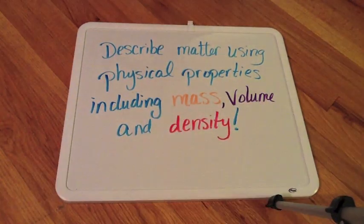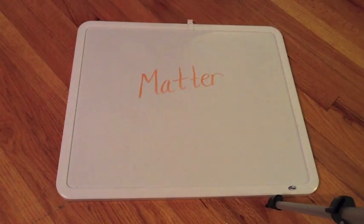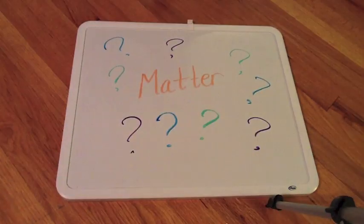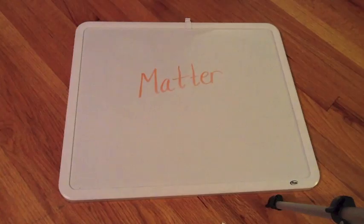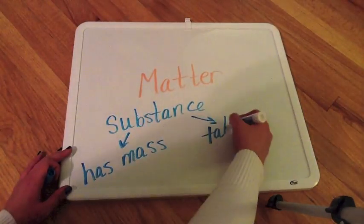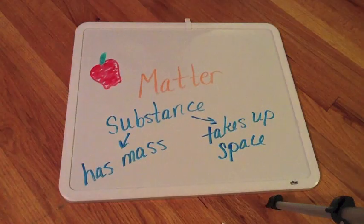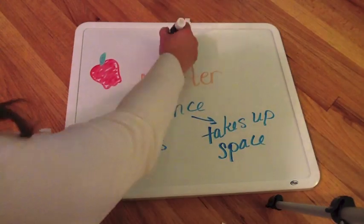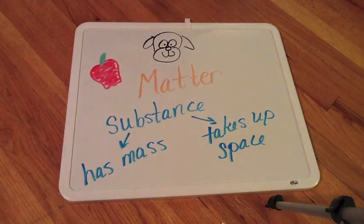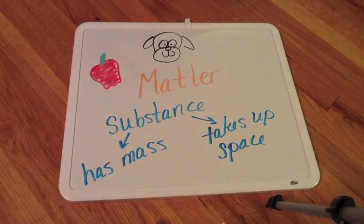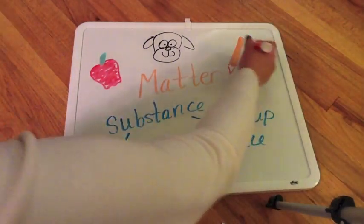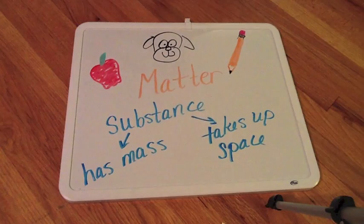Now to accomplish this goal, the first thing we have to do is figure out what exactly is matter anyways. Well, matter is a substance that has mass and takes up space. So some examples could be a delicious apple, a cute little puppy dog, or maybe even a pencil, because all three of those objects have mass and take up space.